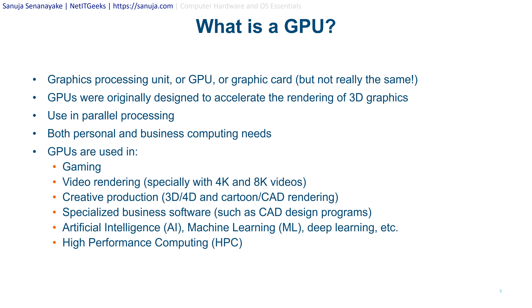What is a GPU? Graphic Processing Unit or GPU is a term we typically interchange with the term graphic card. However, they are not the same. GPUs were originally designed to accelerate the rendering of 3D graphics, and GPU technologies use what we call parallel processing. Modern day GPUs are embedded in both personal and business computing, either as part of an integrated circuit within the motherboard and CPU, or as a separate card.